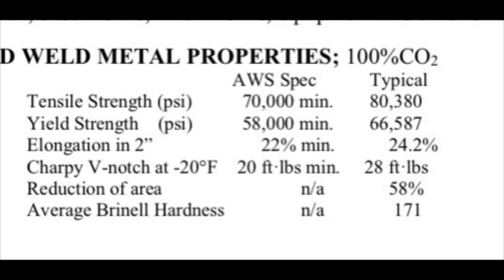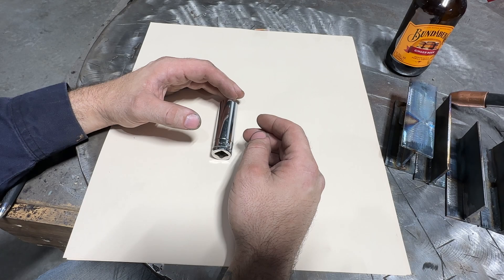Keep in mind this spec sheet is only for the filler material itself. When you actually weld something, you're creating an alloy of both the filler and the base material, so these test results do not apply to your finished weld - only to the wire itself. If you want to see more of these, go to Washington Alloys, Lincoln Electric, or any wire manufacturer's website. They generally have spec sheets for all their products, and they're pretty straightforwardly laid out.